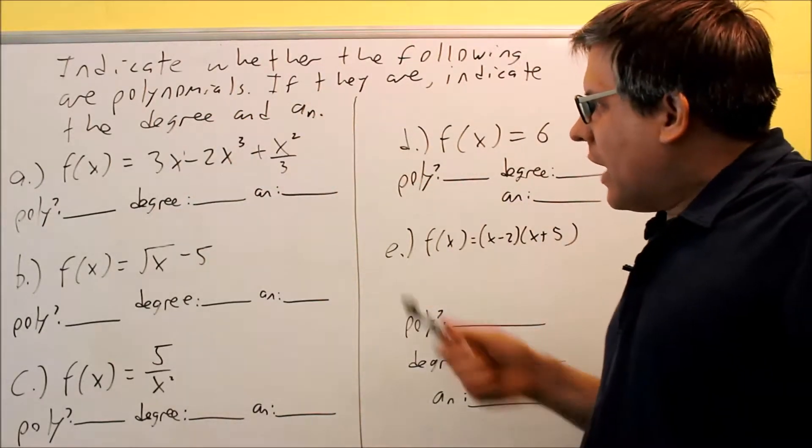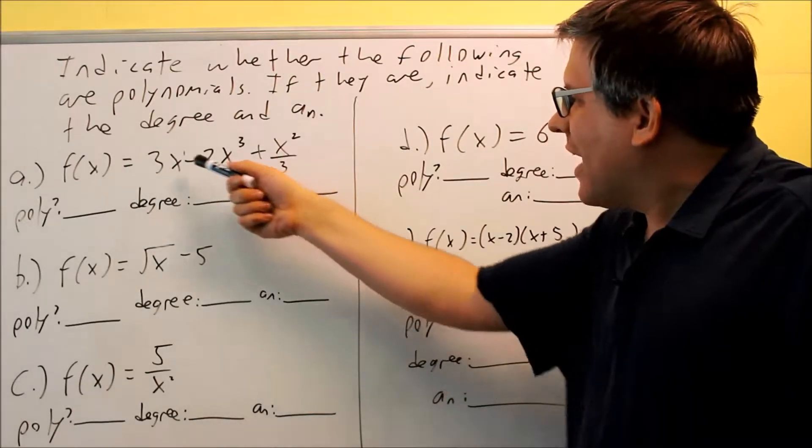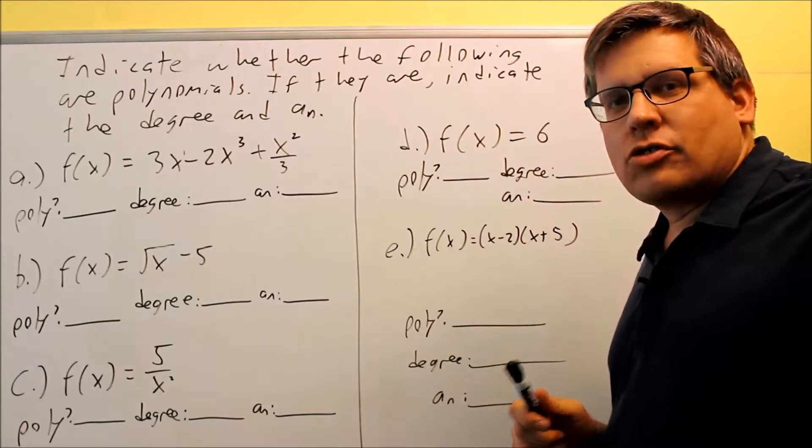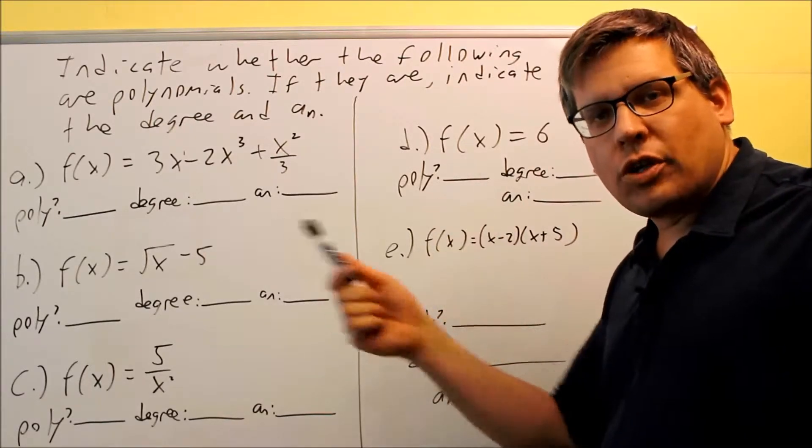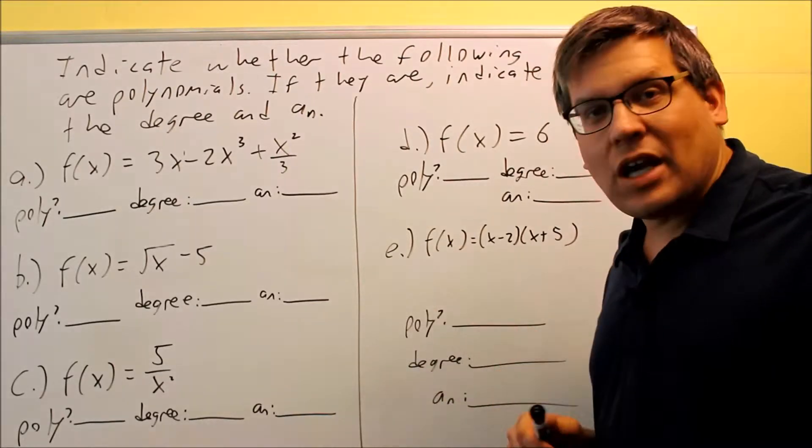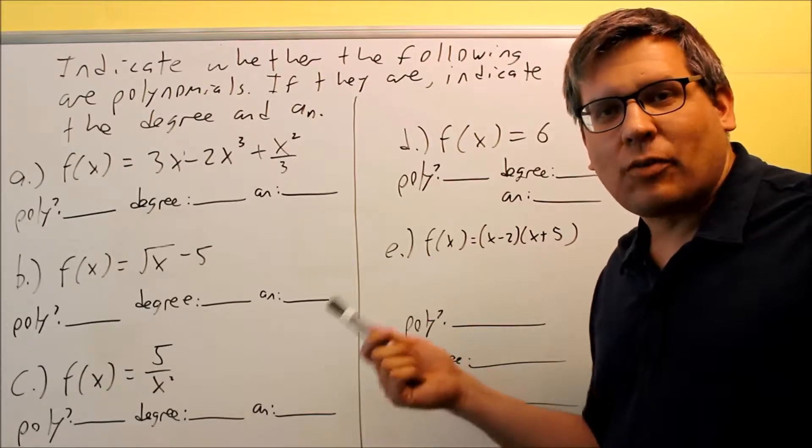So first, how do you know if it's a polynomial? Well, a polynomial, the values on the x, the exponents, they have to be positive integers, meaning it's going to be 0, 1, 2, 3, and so forth. We can't have any fraction exponents, and we're not allowed to have any negative exponents either. So that's the first condition if you have a polynomial.